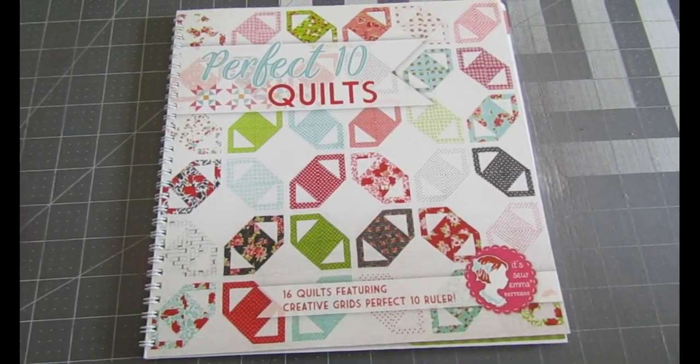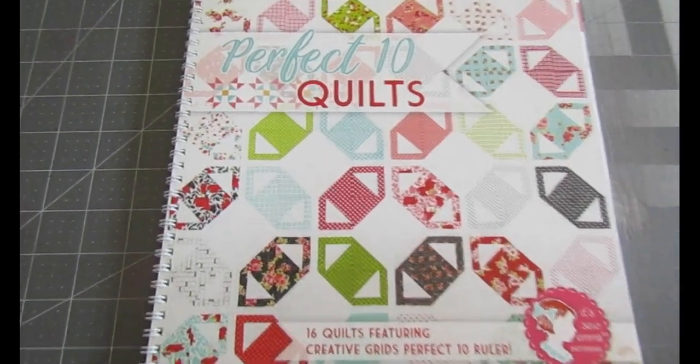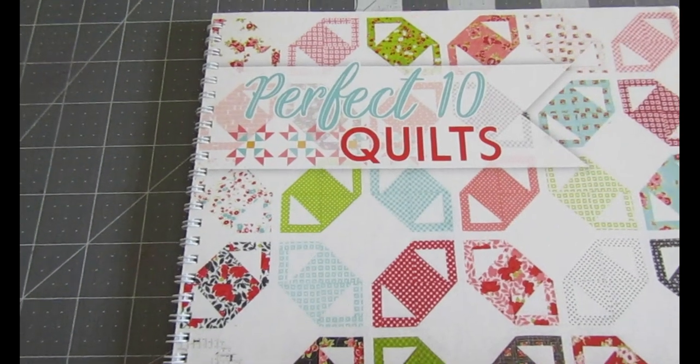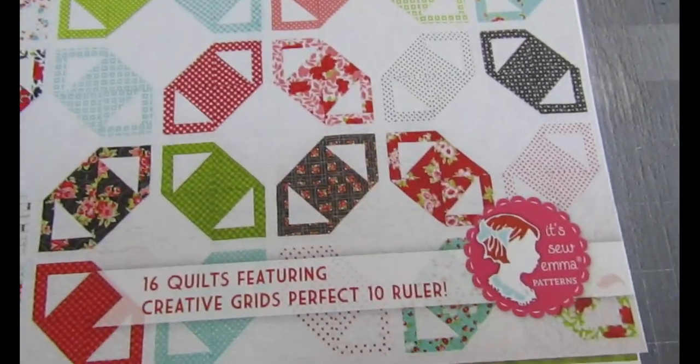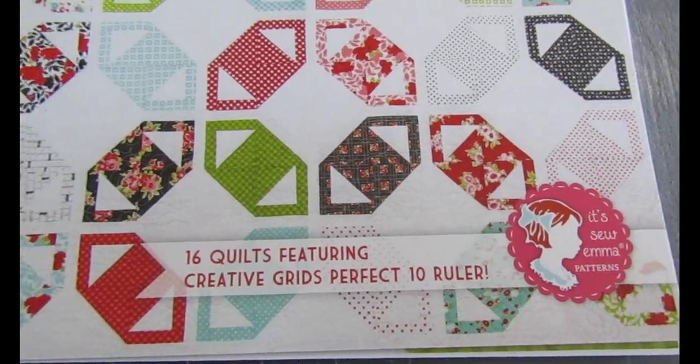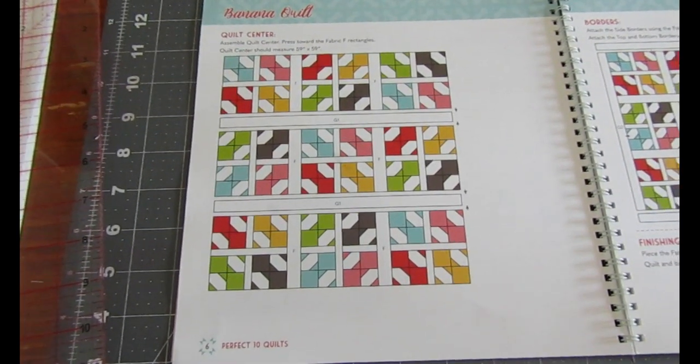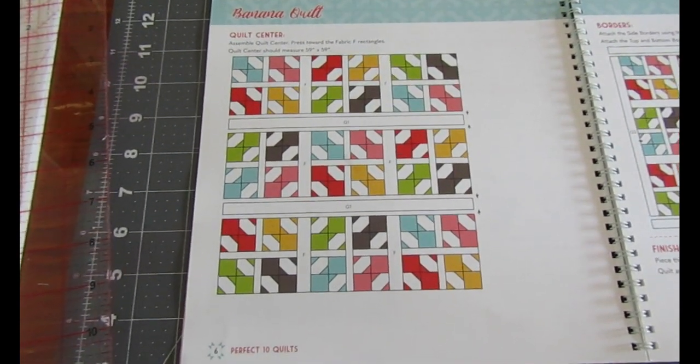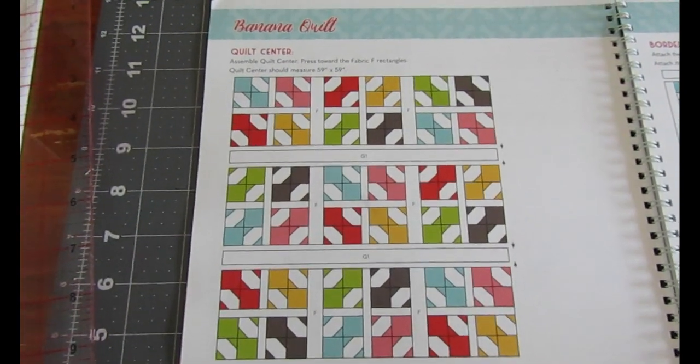If you haven't checked out video one, this is the book where I got the pattern from. As you can see, it is Perfect Tense Quilt and it is published by It's Sew Emma. This was also in video one, but in case you haven't seen video one, I'll give you a quick look at the diagram and the actual quilt that I'm working on.